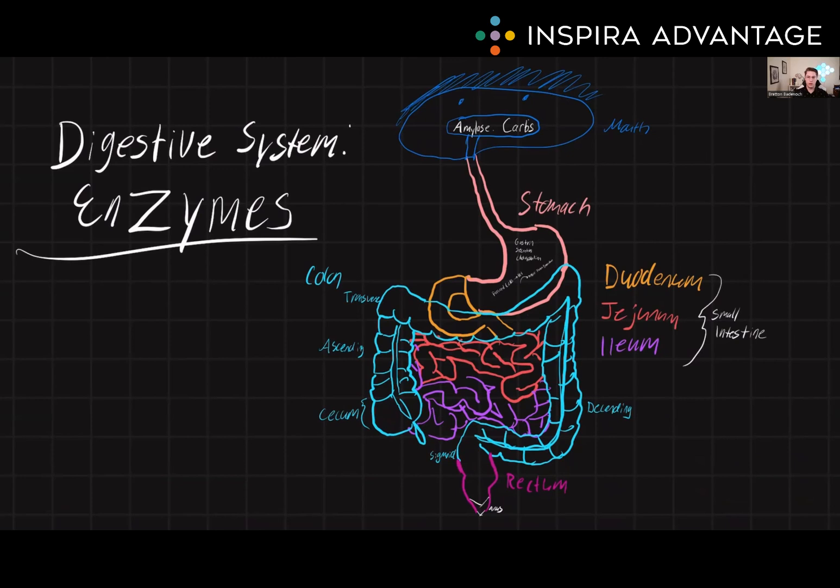Hormones play a critical role in regulating the digestive process. Several hormones are involved in the regulation of the digestive system, including gastrin, secretin, cholecystokinin or CCK, and ghrelin.